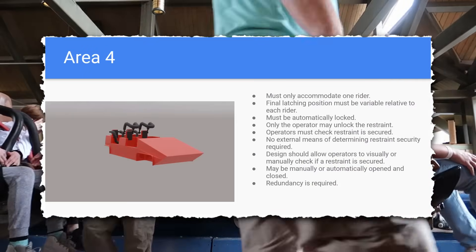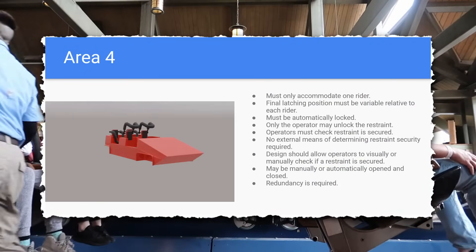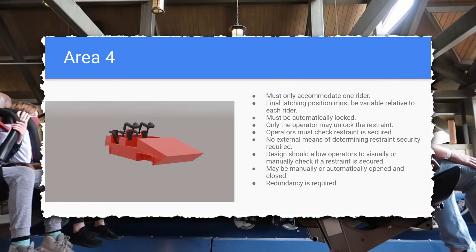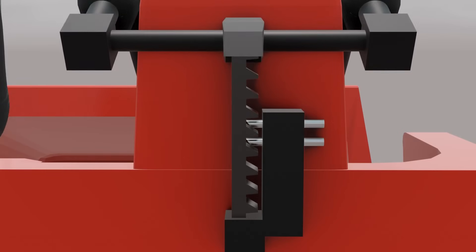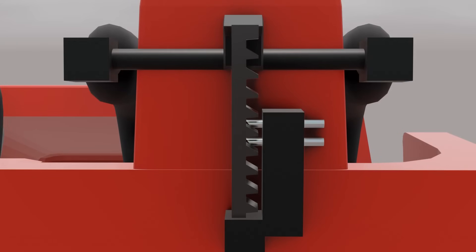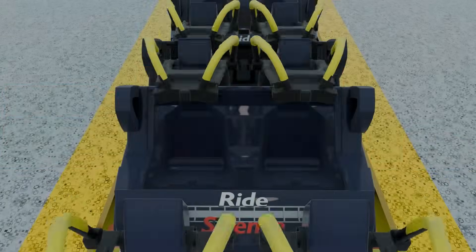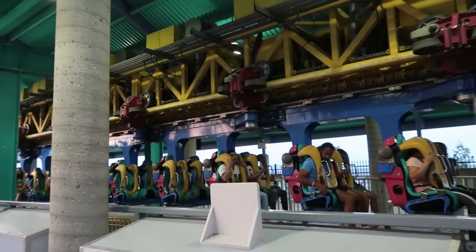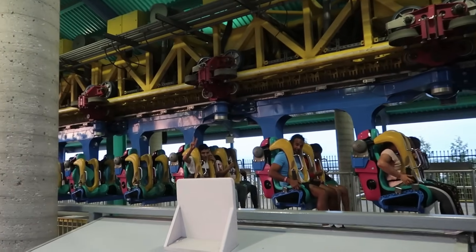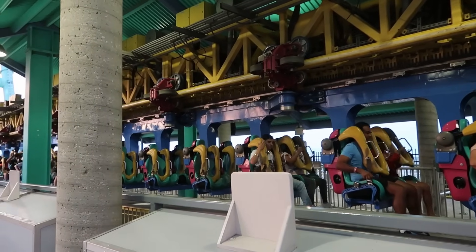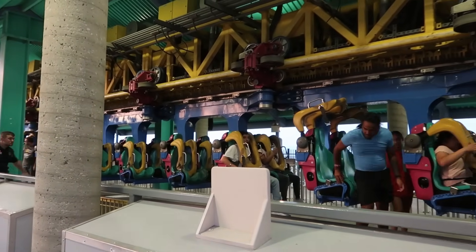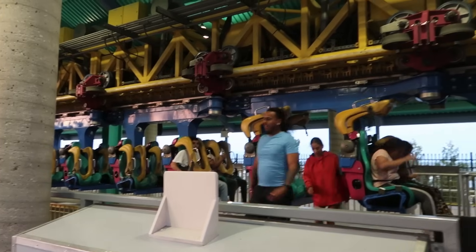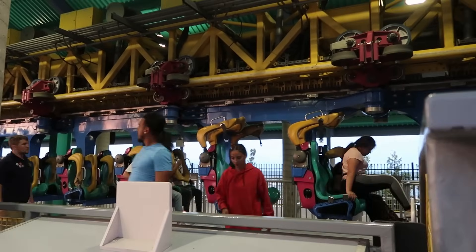I've made a specific video on this topic if you'd like to learn more about it. Ride manufacturers can enhance restraint security by adding features such as additional locking positions, dividers, seat bolsters, and more. These enhancements can increase access for smaller riders, but must be implemented tactfully, as they can also limit access for larger riders.